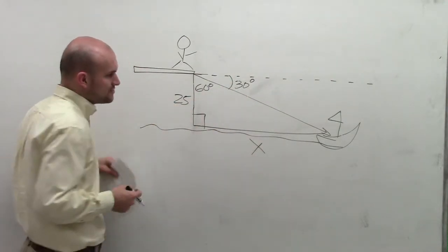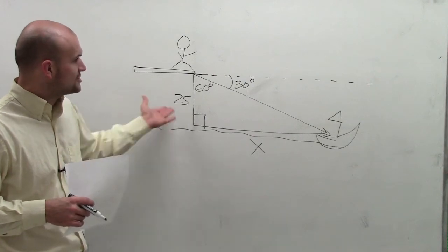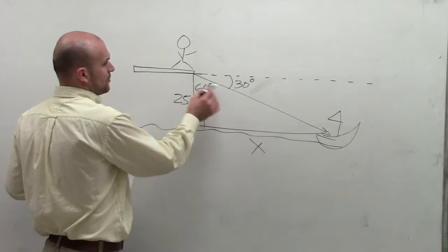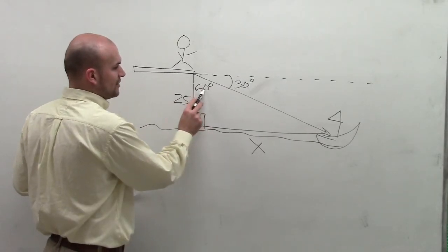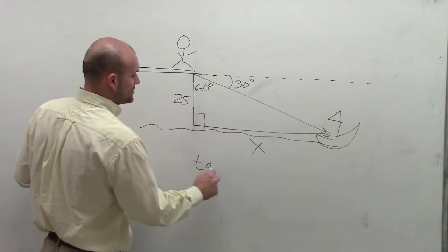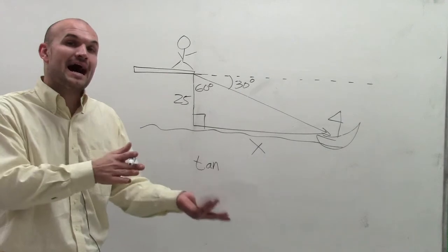I can now use my trigonometric properties to be able to figure out what my distance of x is. So if here's my angle and I have an opposite side over an adjacent side, I could use my tangent.